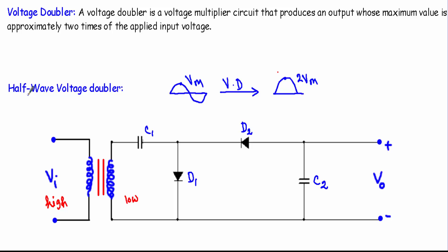A half-wave voltage doubler circuit uses a step-down transformer, two capacitors C1 and C2, and two diodes D1 and D2. At the input side of the step-down transformer I apply high electrical power, which is converted to low voltage AC. This AC power will have two half cycles — a positive and a negative half cycle. I will now proceed with the operation of this circuit during the positive half cycle.